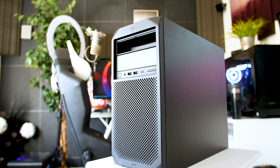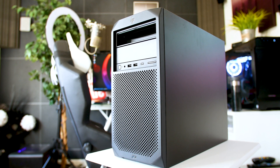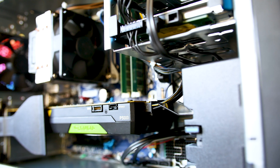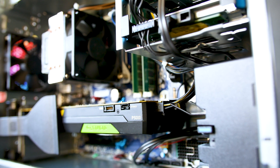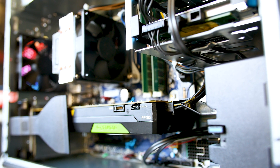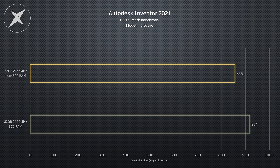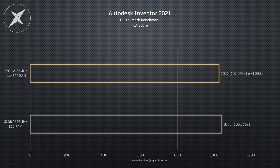Here's an HP Z2G4 workstation — a cracker of a machine. It's equipped with a six-core Xeon 2176G and a Quadro P5000. One configuration will have 32 gigs of ECC RAM and the other will have 32 gigs of non-ECC RAM. Running my new InVmark benchmark test.